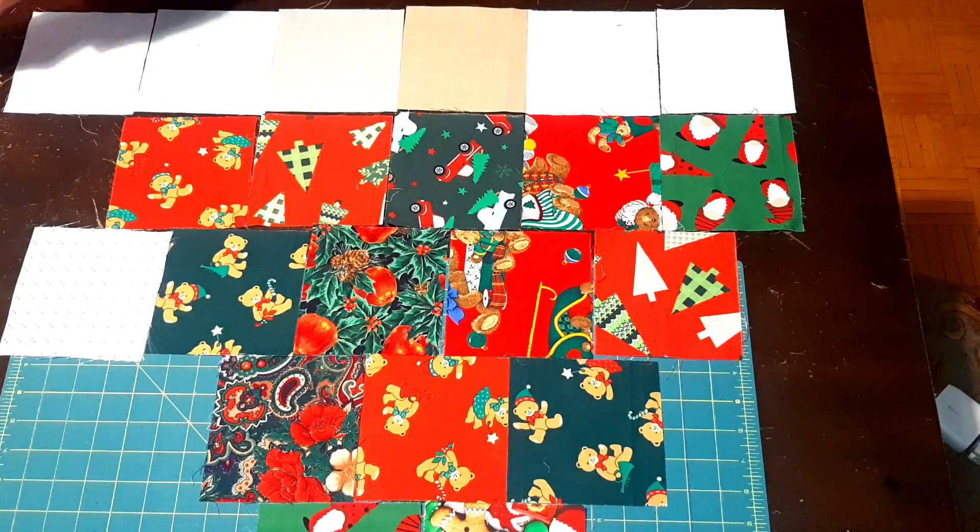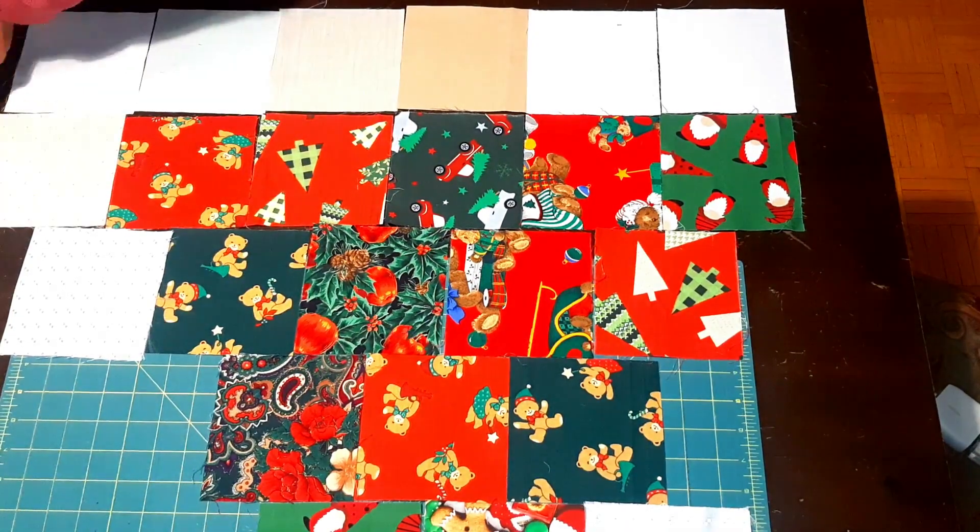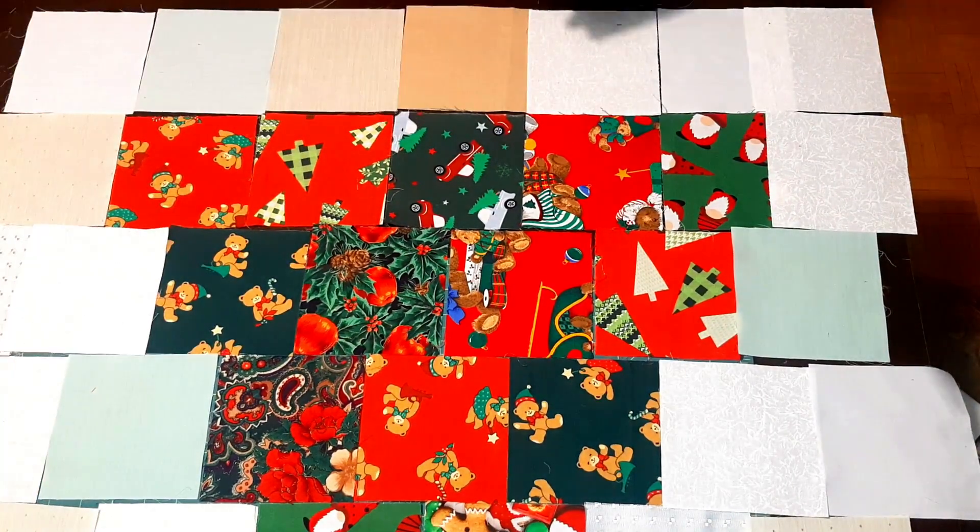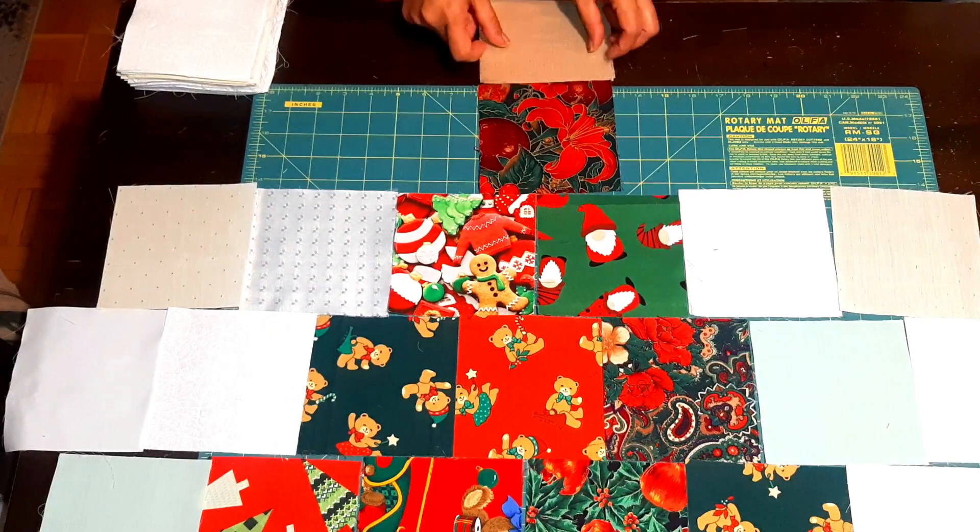I started by placing my printed fabric and I made rows of five all the way down to one in the shape of a tree, and then I started placing the background fabric around the tree.